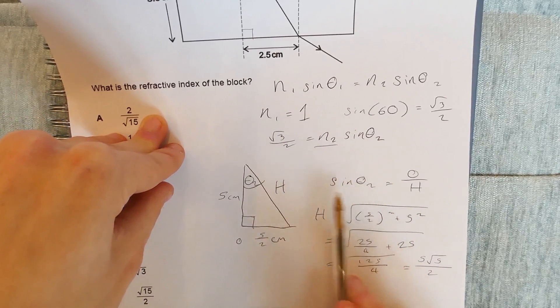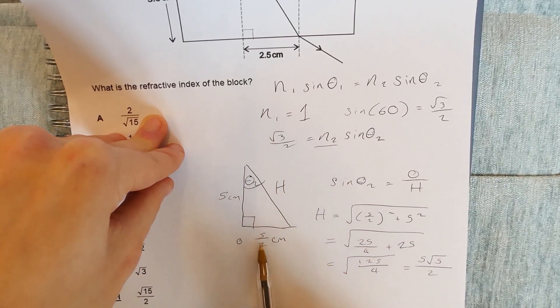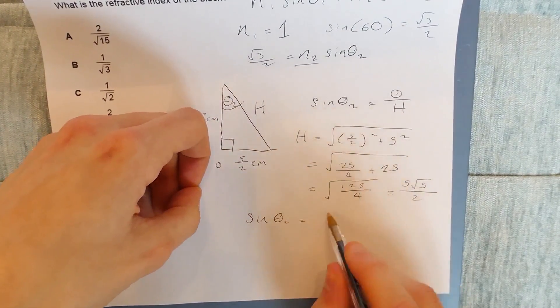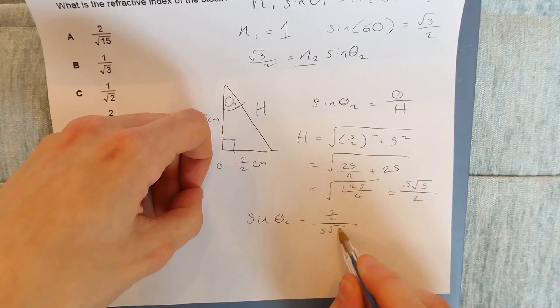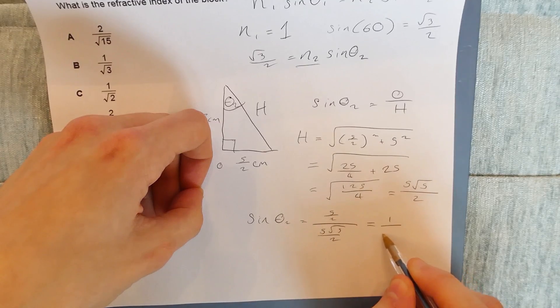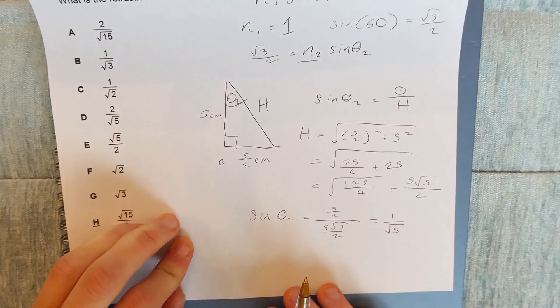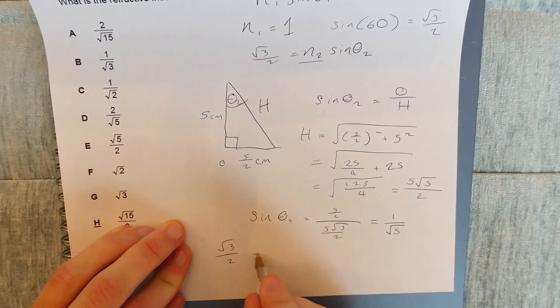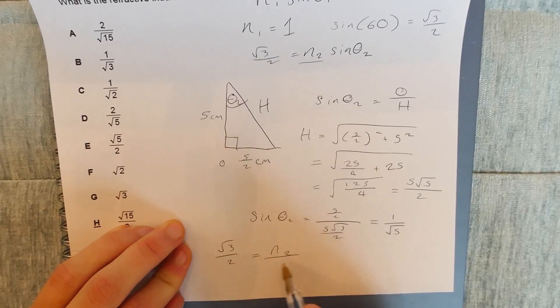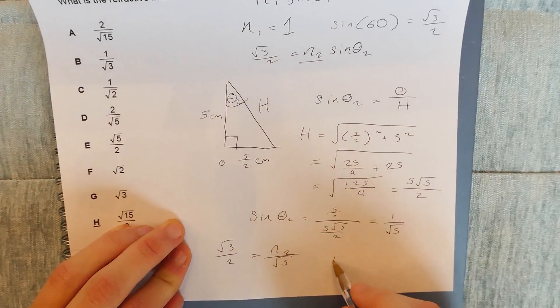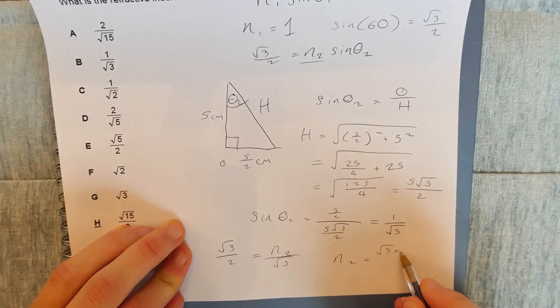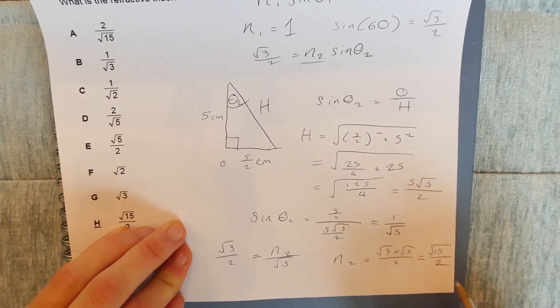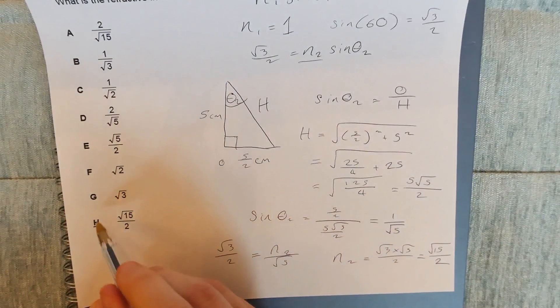So that is our hypotenuse, and we know that sine theta 2 is the opposite, so 5 over 2 over our hypotenuse. So therefore, sine theta 2 is equal to 5 over 2 over 5 root 5 over 2 is equal to 1 over root 5. So perfect, now we can substitute this back into our earlier formula. So root 3 over 2 is equal to N2 over root 5. And when we multiply both sides by root 5, root 3 times root 5 over 2, and therefore this will go to root 15 over 2. Therefore, we know that our answer is going to be H.